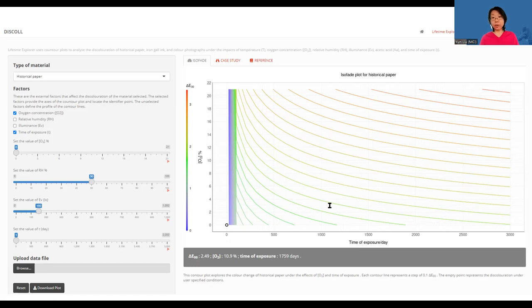Therefore, RH always fluctuates in the range, and this uncertain RH will lead to an uncertain discoloration outcome, which means the discoloration will also fluctuate in the range instead of being a fixed value.